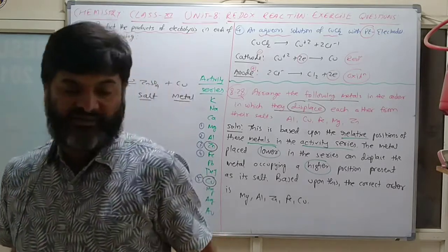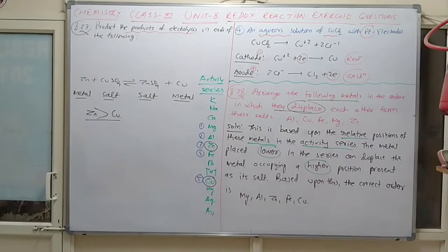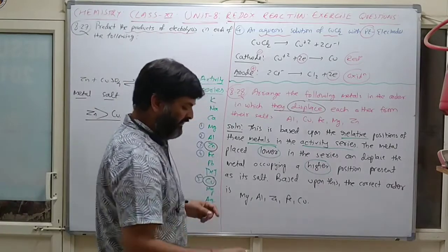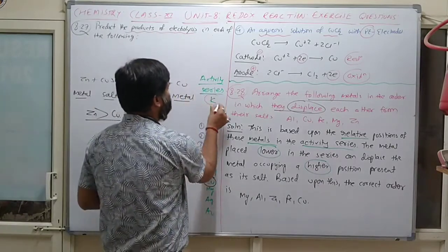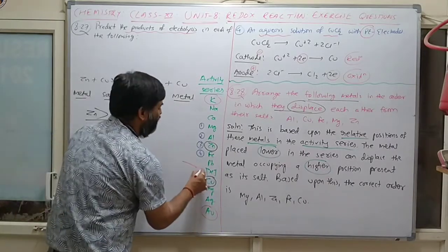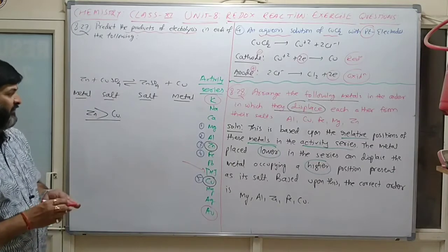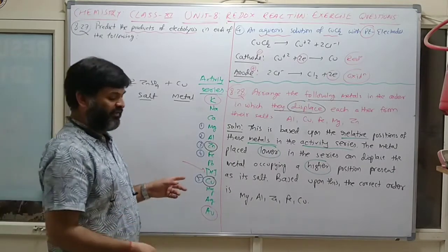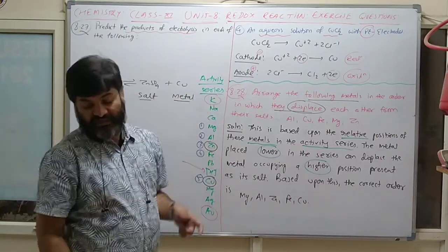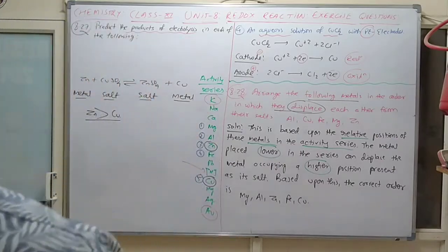In the reactivity series, potassium is the most highly reactive metal, while gold is the least reactive. Hydrogen (a non-metal) is also placed in the reactivity series as a reference point. You must memorize this reactivity series.